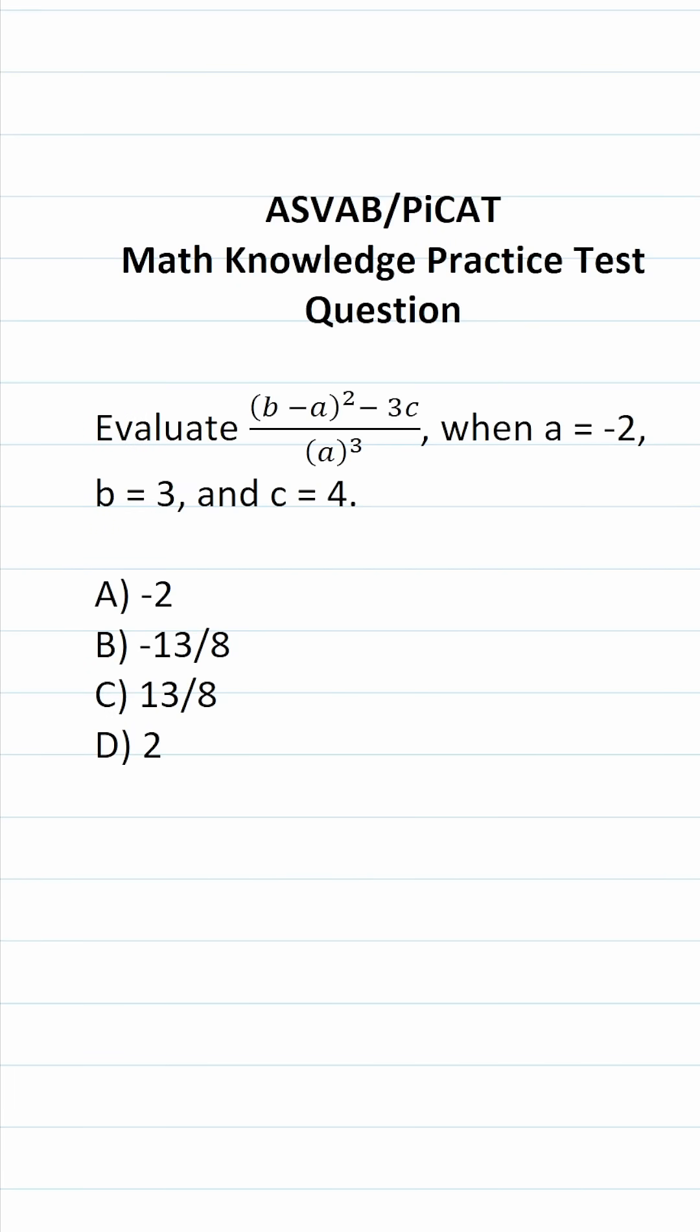This math knowledge practice test question for the ASVAB and PiCAT says: Evaluate (b - a)² - 3c divided by a³ when a = -2, b = 3, and c = 4.